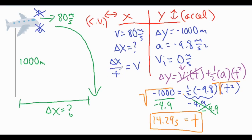which could be used over here. So we have a delta x value that we're looking for. We have a time of 14.29 seconds, and that equals 80 meters per second.